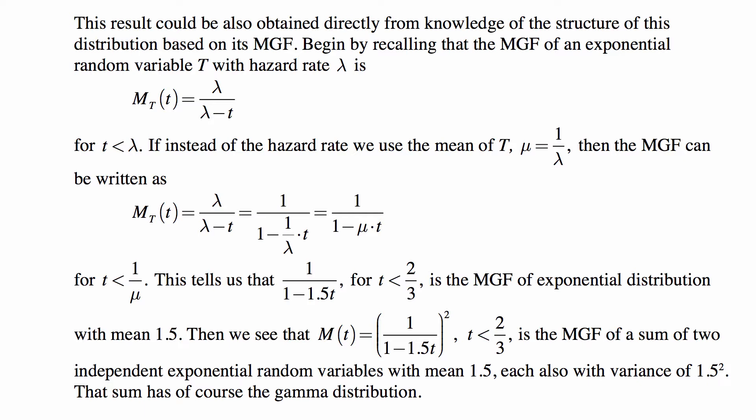And if instead of the hazard rate we use the mean of T, which is mu = 1/lambda, then the MGF can be written as lambda/(lambda-t), which is the same as 1/(1-1/lambda times t). So 1/(1-mu*t), for t < 1/mu.